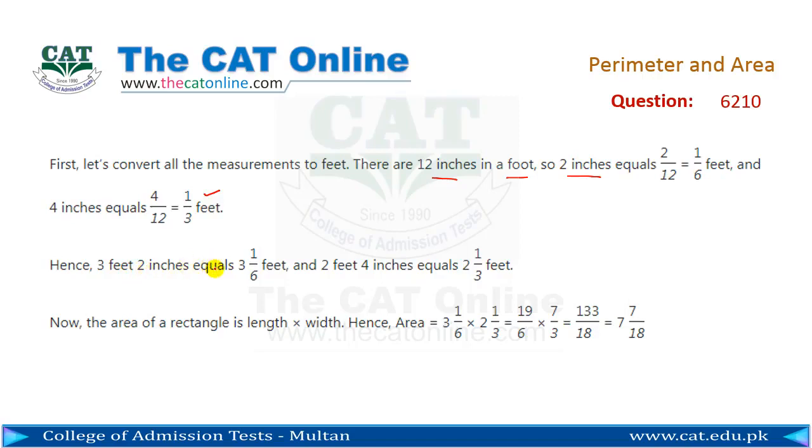So 3 feet 2 inches equals 3 and 1/6 feet, and 2 feet 4 inches equals 2 and 1/3 feet.